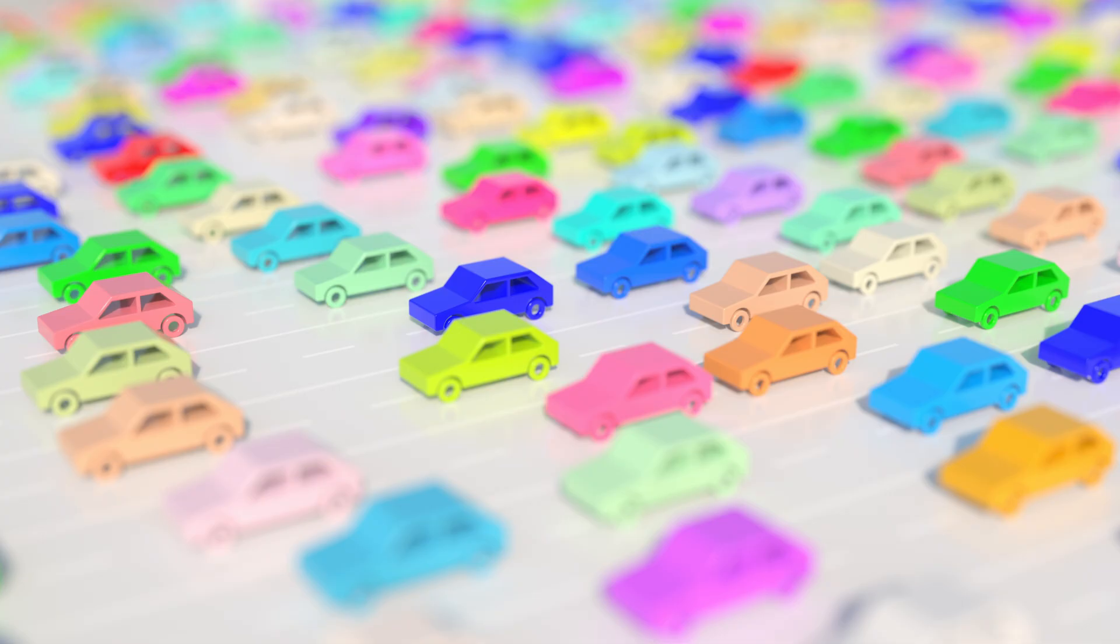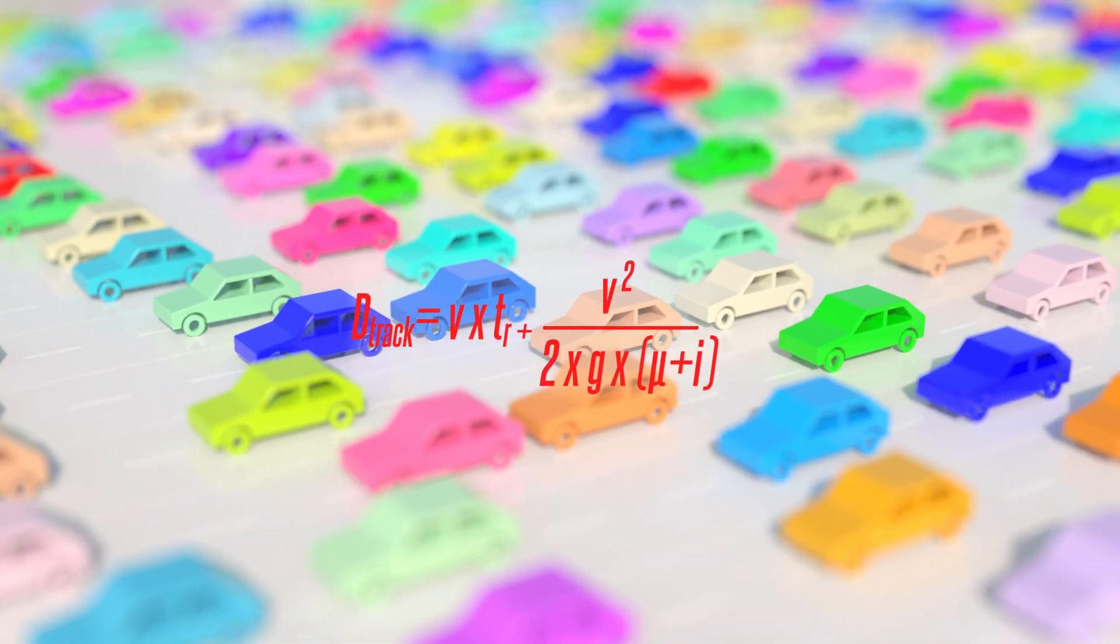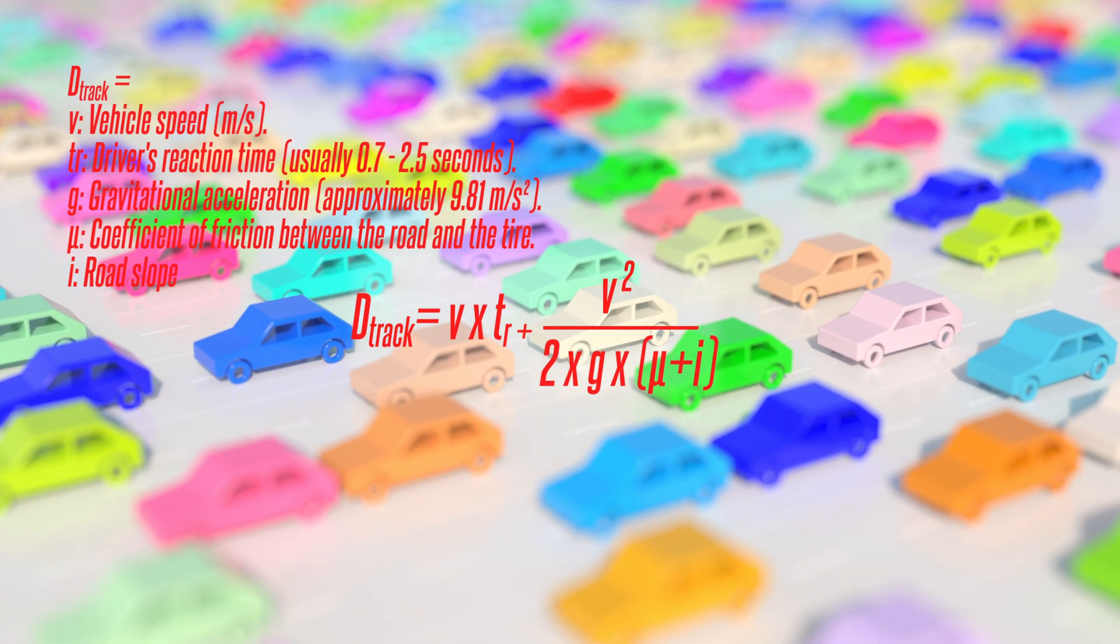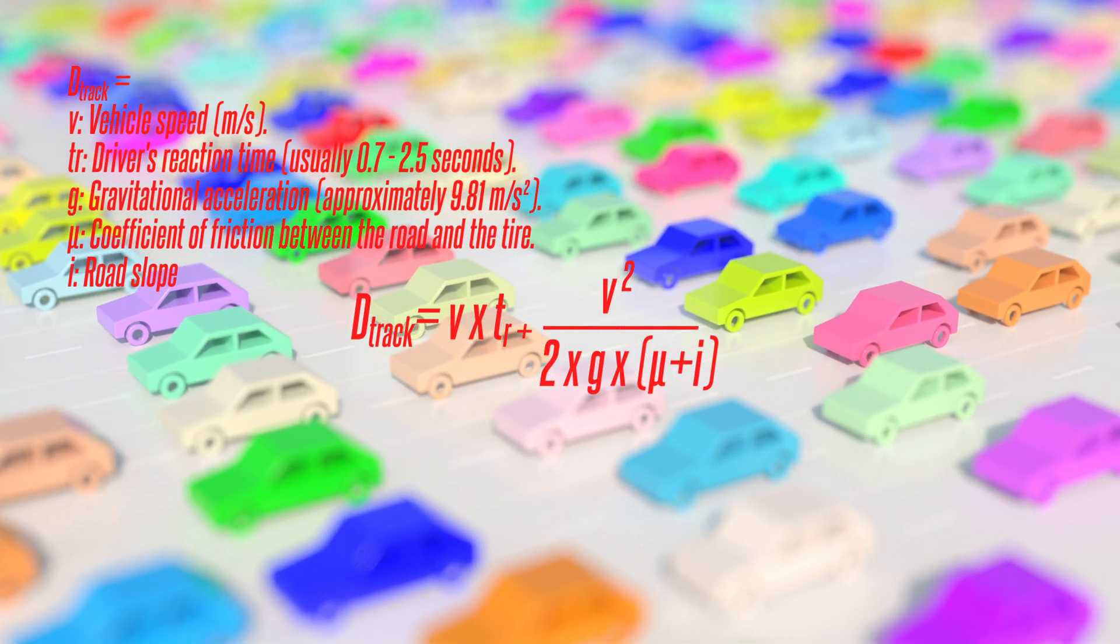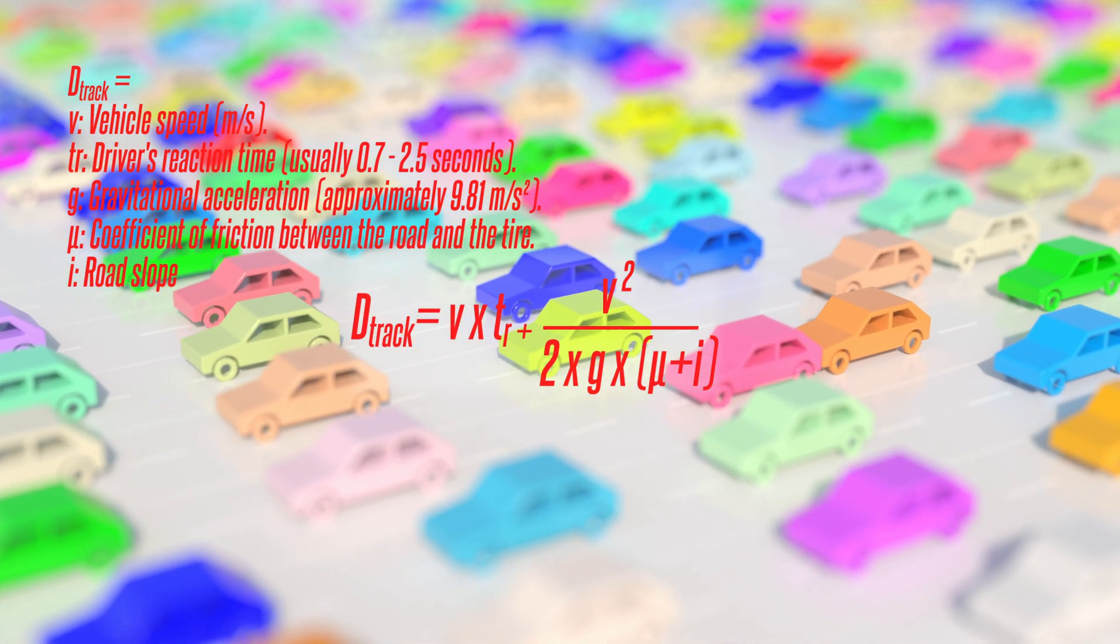These variables are set accordingly. And this is the safe following distance formula. Vehicle speed, road and tire resistance, and gravity are considered. That's how flow is ensured. We can call these traffic laws.